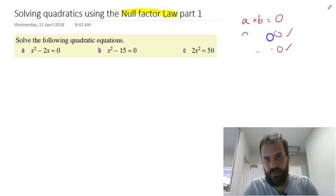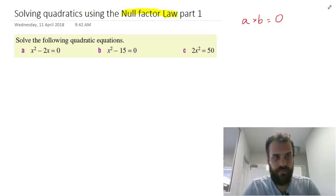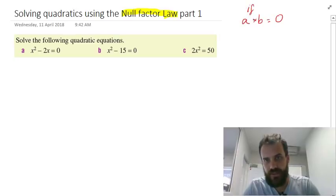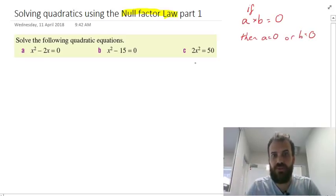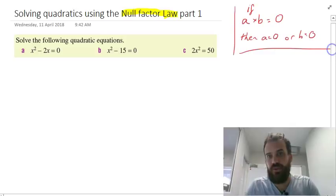Let's write this properly. If a times b equals zero, then a equals zero or b equals zero. That's what the Null Factor Law is. Now we can use the Null Factor Law to solve these three questions.